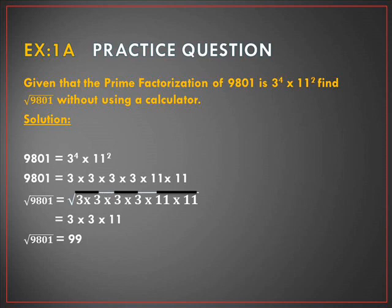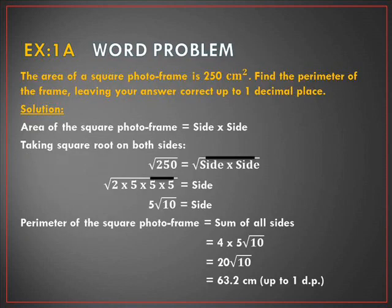We need to find the square root of this number, so we put a square root sign over it. As per the rules of the equation, whatever we do on one side we do to the other side as well, so we put a square root over the factors too. The numbers repeated twice come out of the square root, giving us 3 × 3 × 11 = 99. So our final answer is 99.